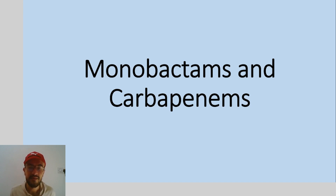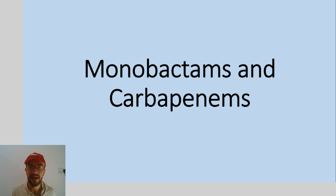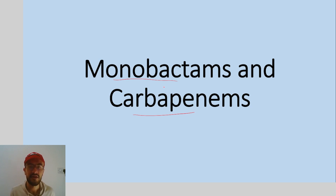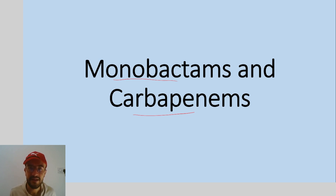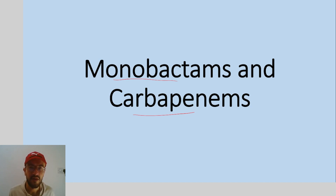Hello everyone and welcome to a new video. Continuing our discussion about antibiotics, we are going to talk about the monobactams and the carbapenems. Those two drugs are also members of the cell wall inhibitors we are discussing, and they are considered beta-lactam antibiotics. They contain the beta-lactam ring and they work the same way as penicillin and cephalosporins do, by affecting the cell wall of the bacteria.